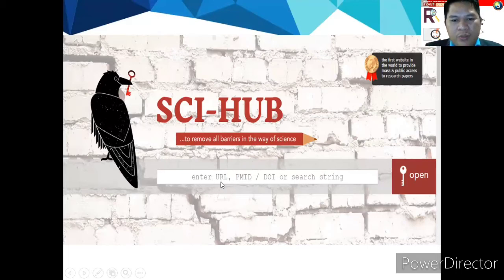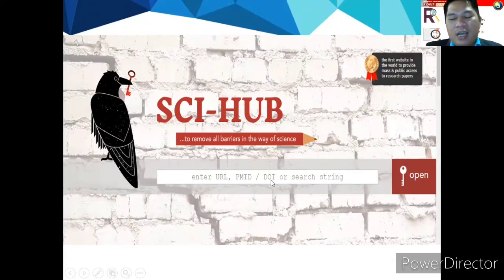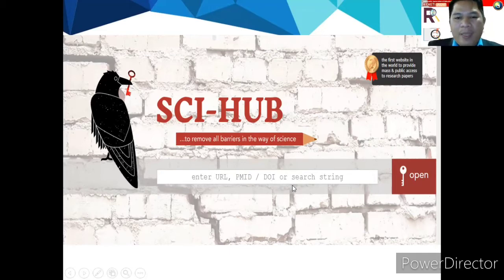Here, as you can see, you can enter the URL, the PMID, or the DOI — the Digital Object Identifier — to search for a research paper.